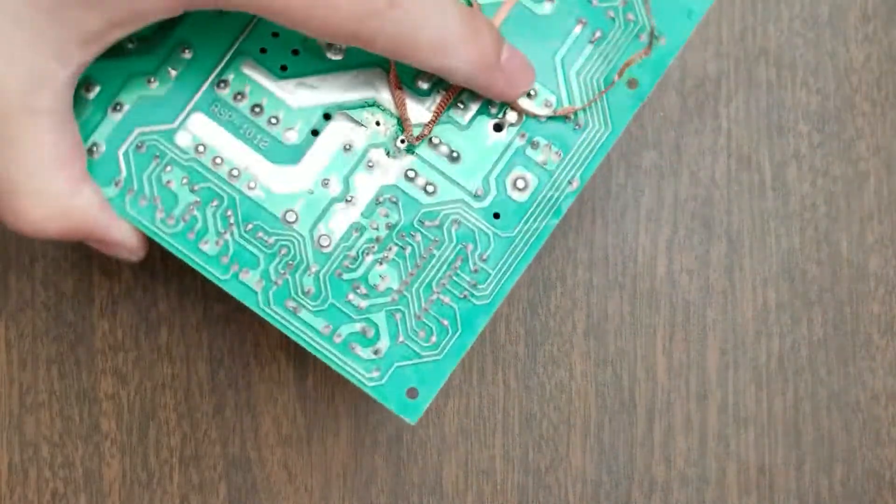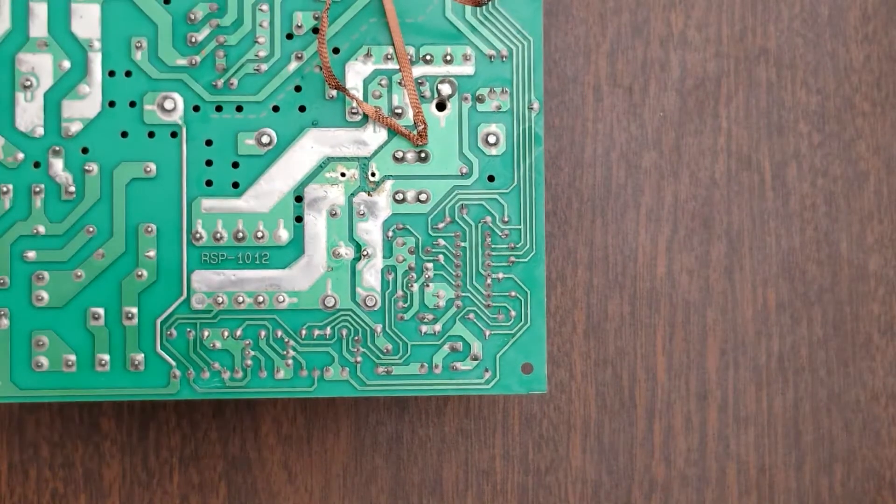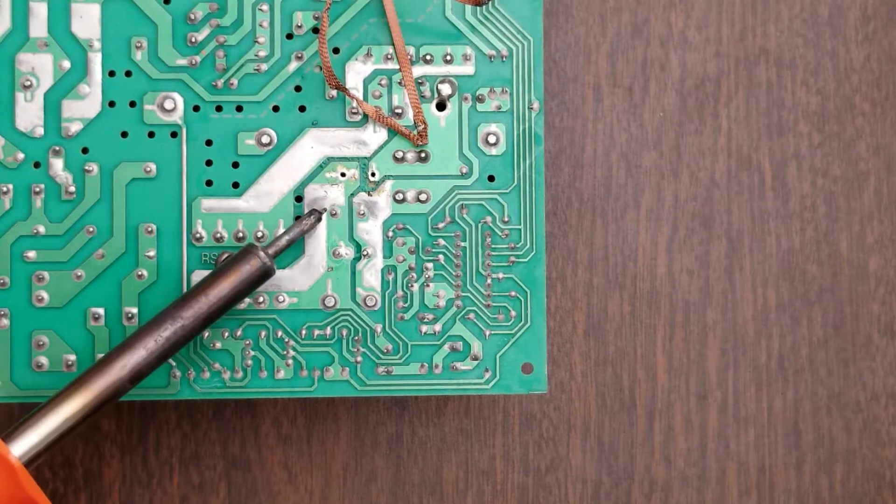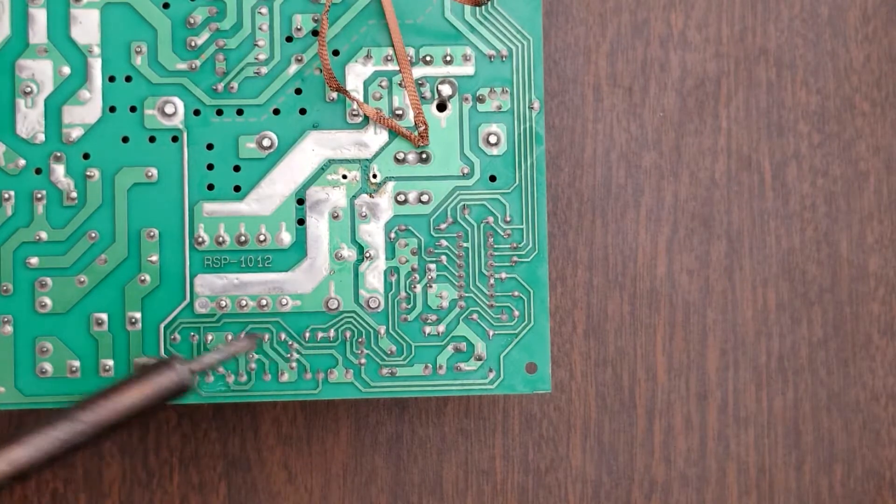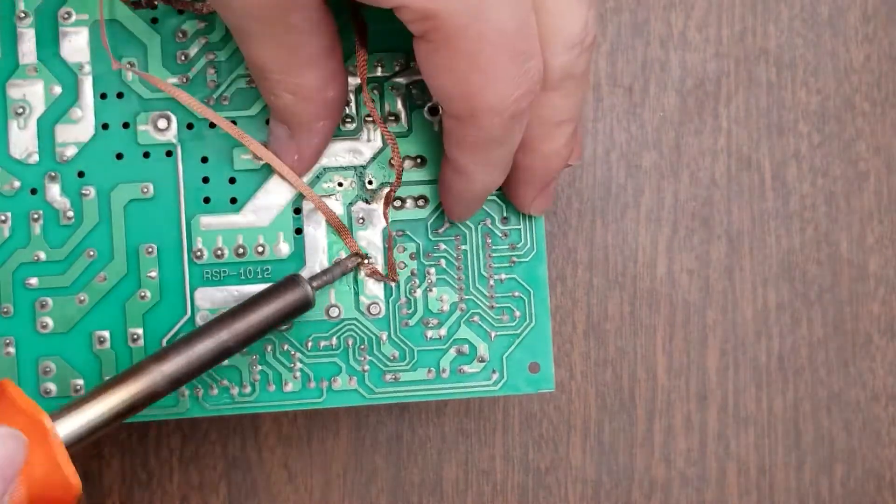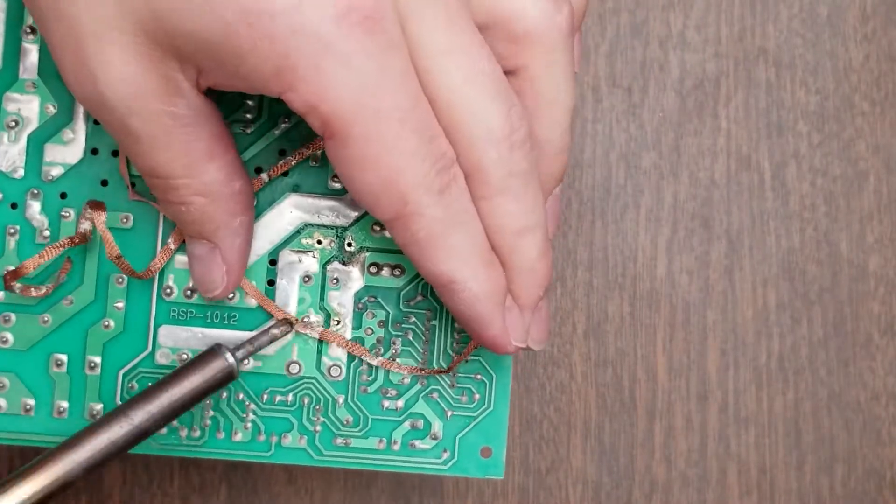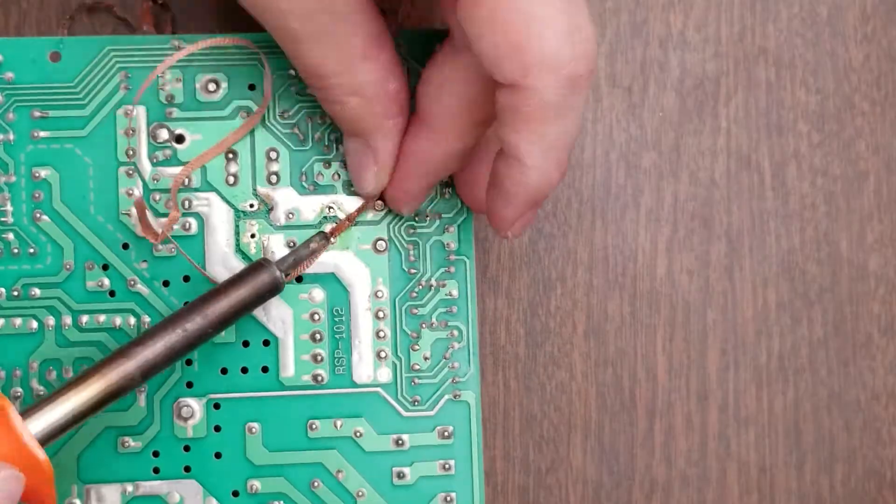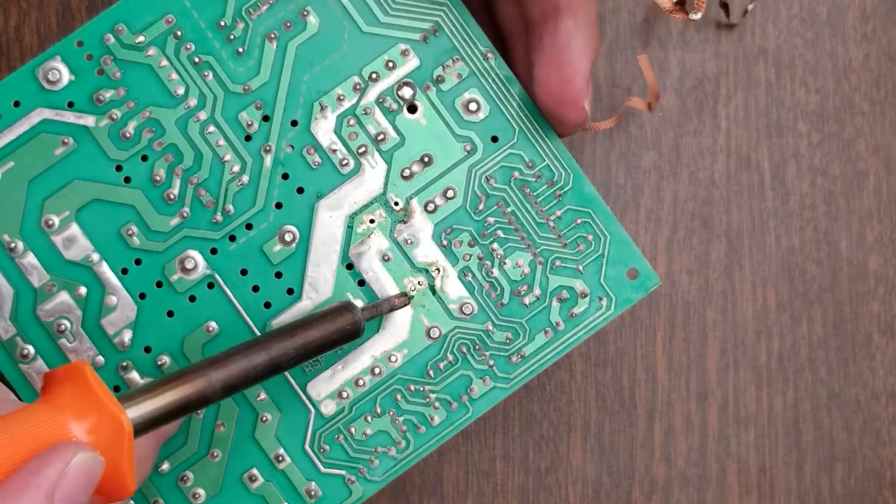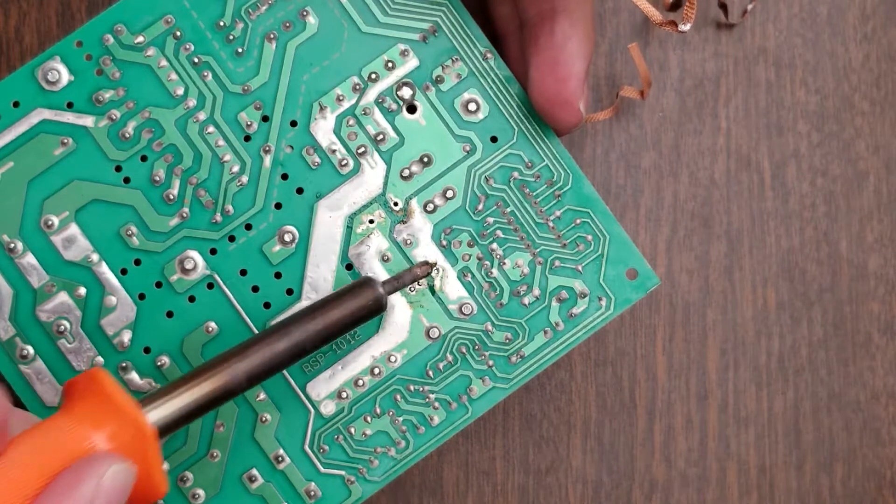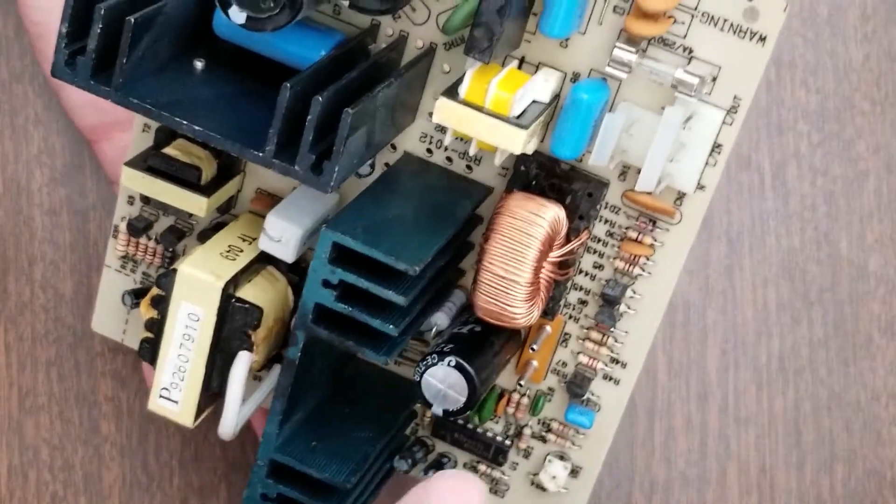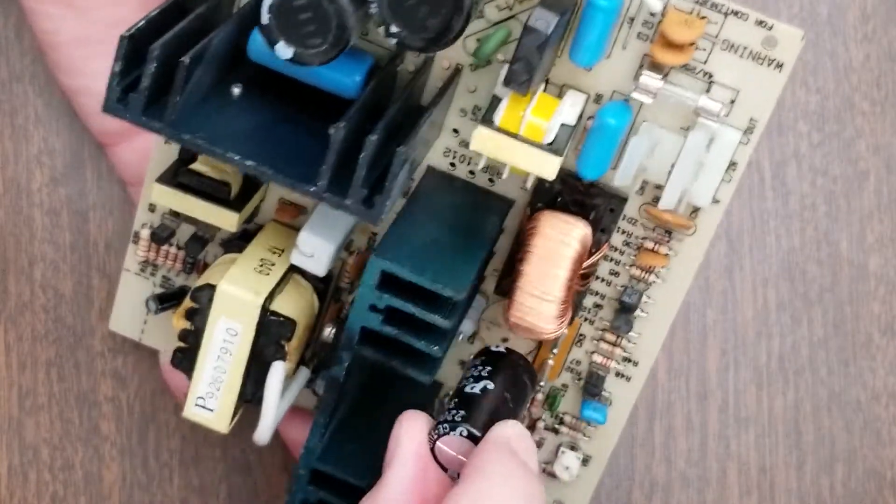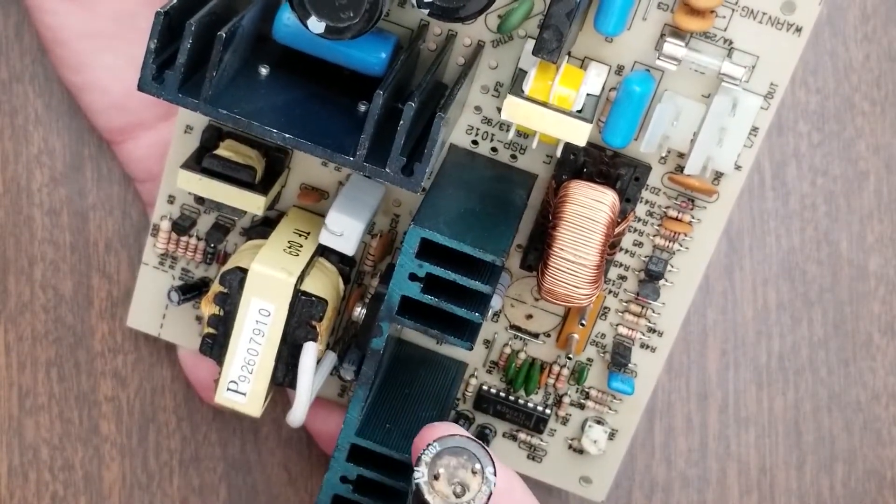Alright, let's get that other one desoldered. So the next component here, that would be the resistor. So this is our second capacitor that we want to take out of circuit and replace. And that should be it. Yep. Alright, soldering iron where it's safe.